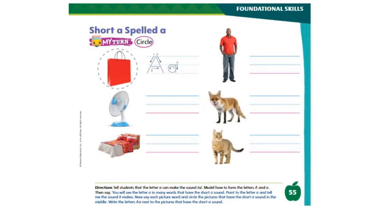Okay, boys and girls, now it's time to do some work in our books. I want you to get your My View books and open to page number 55. The first thing you're going to do is trace the letter A on the lines — down, down, and then across in the middle. Now take a look at this picture — this is a picture of a bag.